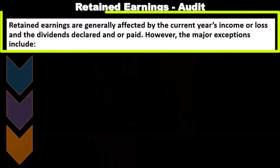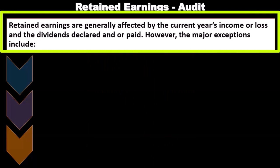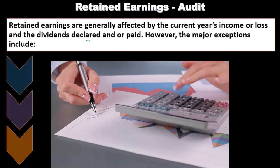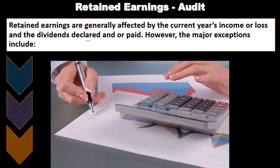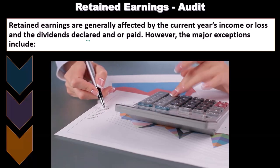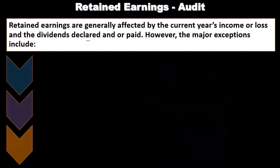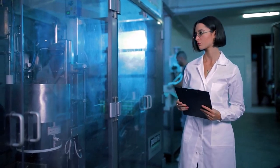Retained earnings are generally affected by the current year's net income or loss and the dividends declared or paid. There are basically three time periods for a dividend: declaration, the record date determining who receives it, and payment. From a financial accounting standpoint, we typically record the dividend when it is declared.